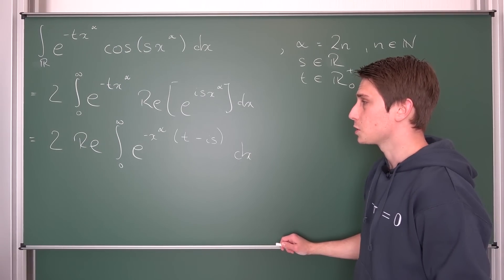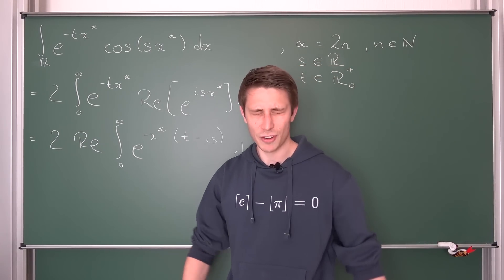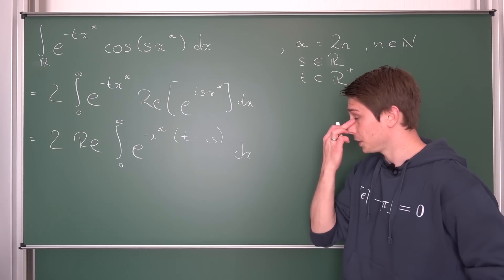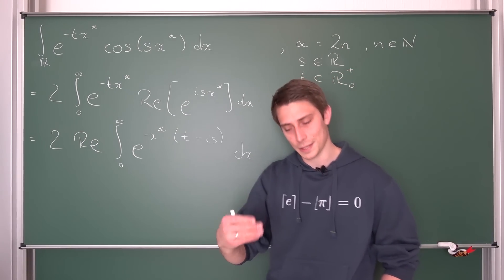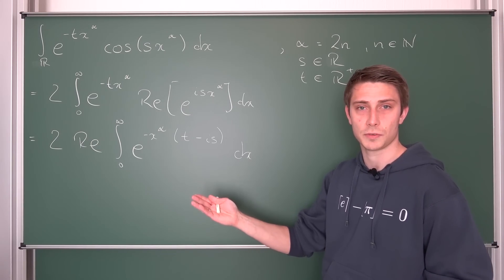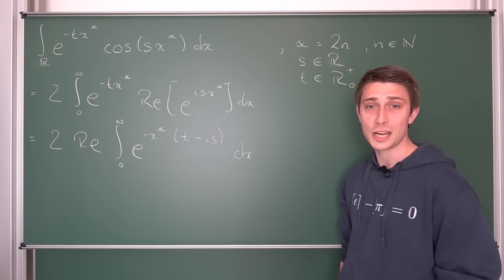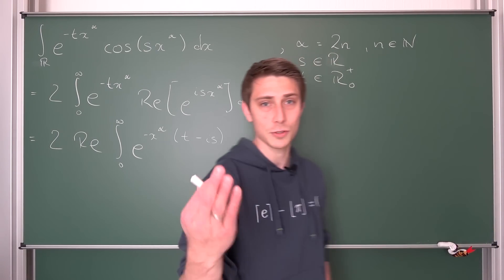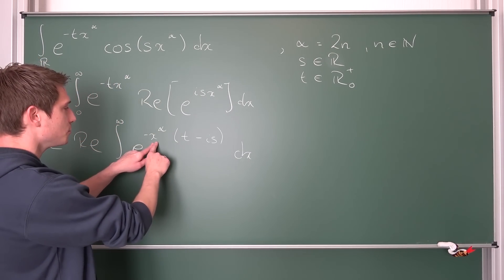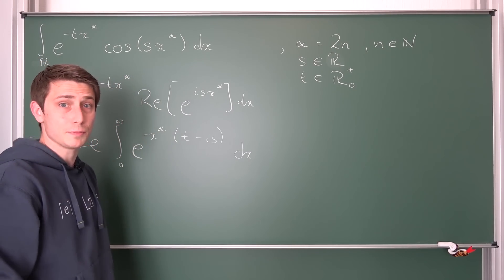Now, how can we continue from this point onwards? We would like to trace everything back to the gamma function — the gamma function is extremely useful and we want to make more use of it. Here comes the part where I said it's going to be a little bit hand-wavy, and you can fill in all the details in the description if you wish. We are going to substitute x to the alpha times this complex quantity for some new variable.